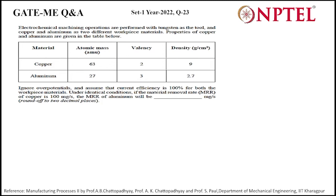This is the GATE 2022 question set 1, question number 23 for the technical part, and question number 33 in the whole paper. Electrochemical machining is a non-conventional machining operation performed with tungsten as a tool and copper and aluminum as two different workpiece materials. Properties of both metals are given.